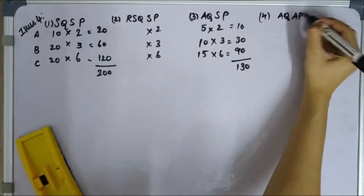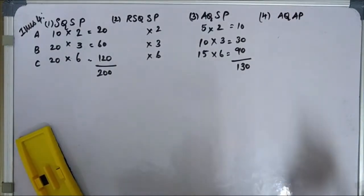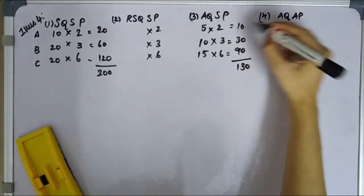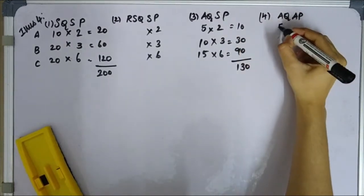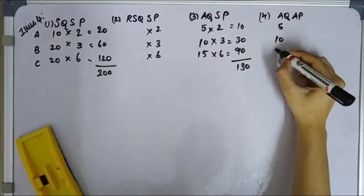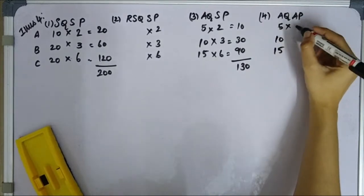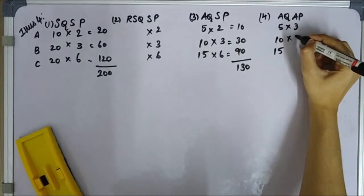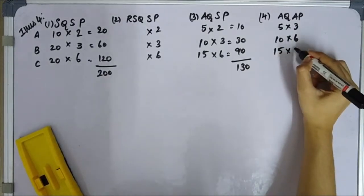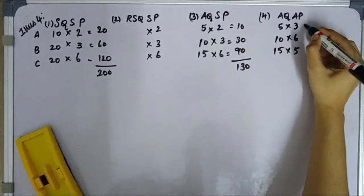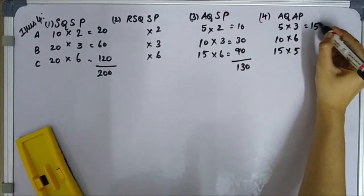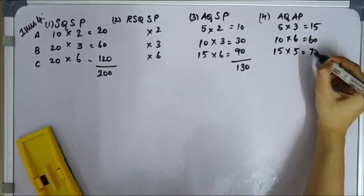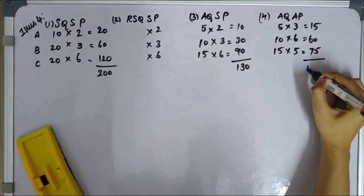Next, AQAP — actual quantity into actual price. Actual quantity: A is 5, B is 10, C is 15. Actual price: A is 3, B is 6, C is 5. We get: A = 15, B = 60, C = 75. Total AQAP is 150.